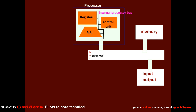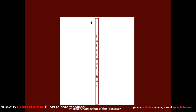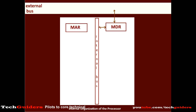There are different kinds of organization. We will discuss one simple one with a single internal processor bus, which connects the various components of the processor. This entire processor system communicates with the external bus using two registers called the memory address register and the memory data register. The memory address register communicates with the external address bus, and the memory data register communicates with the external data bus.